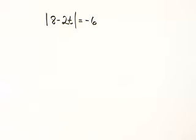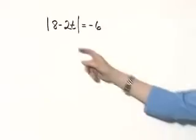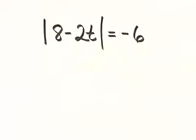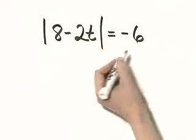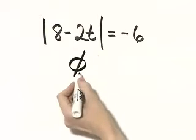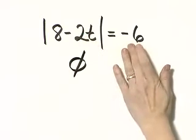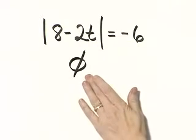Here we are solving an absolute value equation. Notice the absolute value is isolated — it's by itself on one side. However, notice you have an absolute value equal to a negative number. Remember, the absolute value will never be a negative number. Since it will never be negative, this equation has no solution. If you have an absolute value equal to a negative number, the equation has no solution.